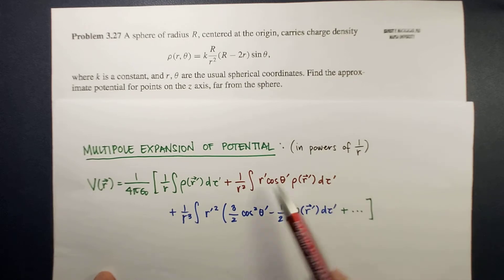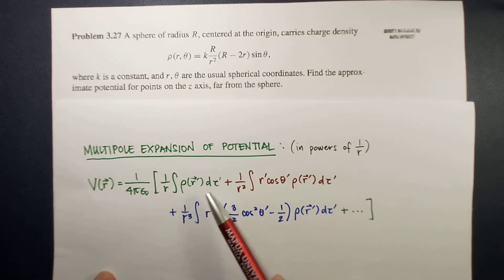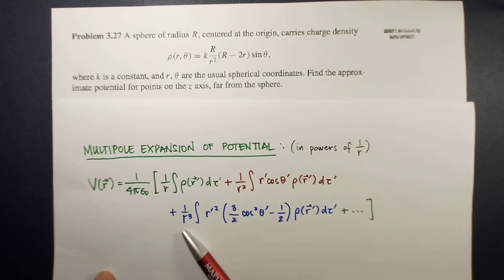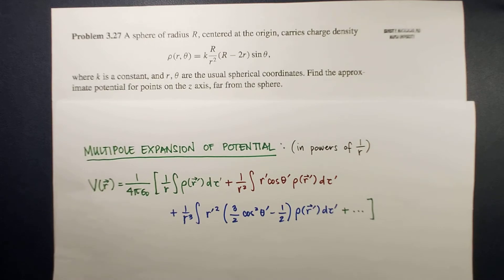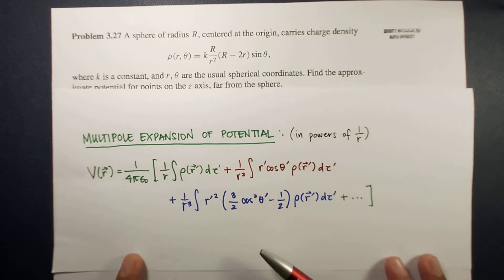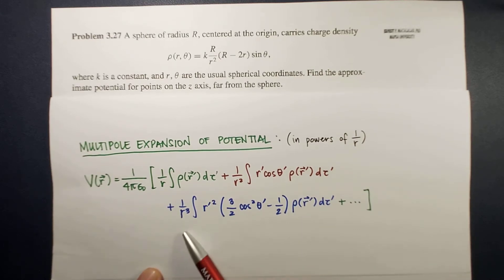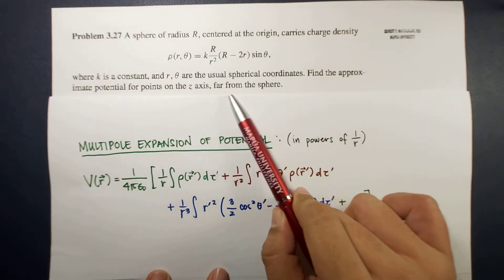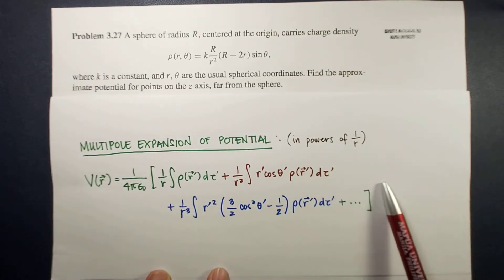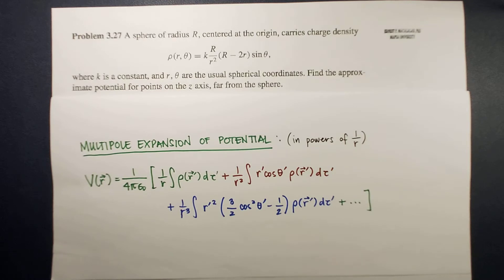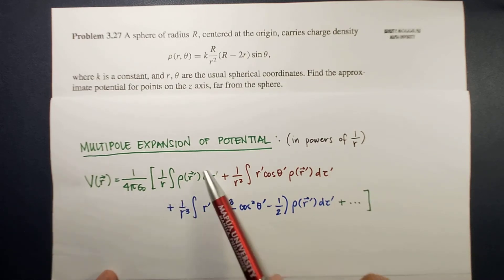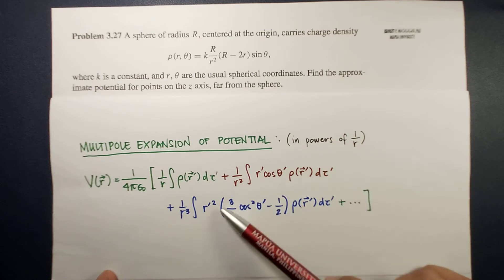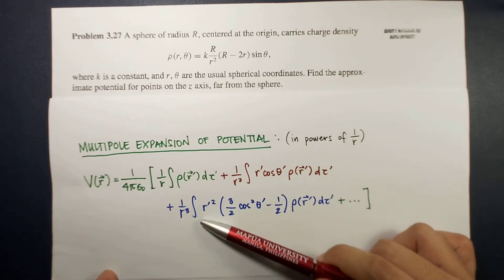1 over r is for monopole, 1 over r squared is for dipole, and 1 over r cubed is for quadrupole. We usually end our approximation at the quadrupole because higher order terms like octopole, which is 1 over r to the fourth power, are neglected since you are looking at points far away from the sphere. In this problem we're going to look at the contribution of the monopole, dipole, and quadrupole terms.